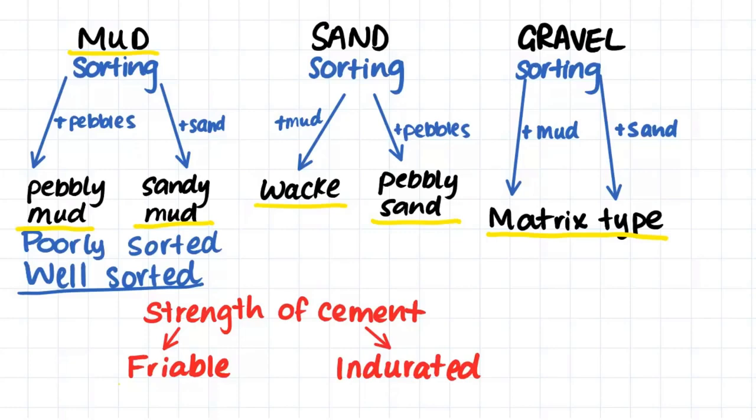Finally, when we're talking about sedimentary rock, we talk about the strength of the cement. If the cement strength is quite low and the rock is able to break apart in our hands, we call it a friable sedimentary rock. Whereas if it is a very strong sedimentary rock that does not break apart in our hands, we would call this rock indurated.